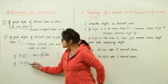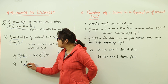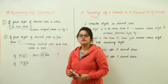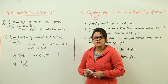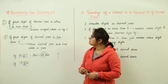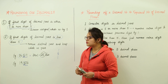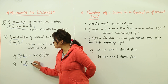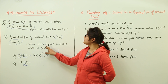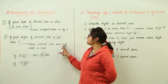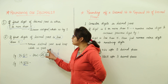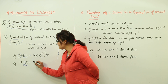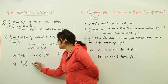Case two: here the first digit of the decimal part is 4, which is lesser than 5. In this case, we remove the decimal part and keep the whole number only. So just forget about the decimal part and your answer would be 19.